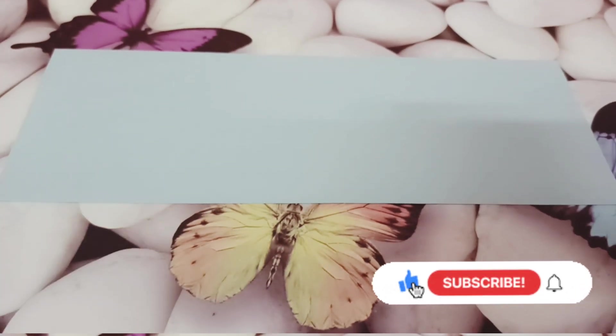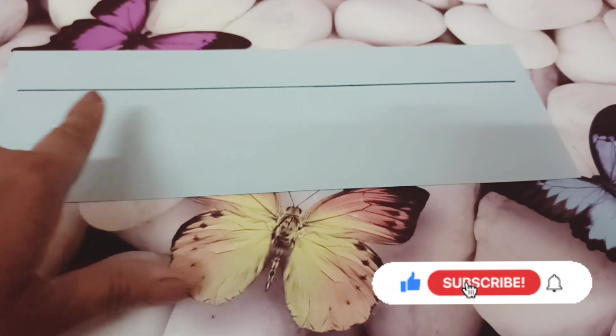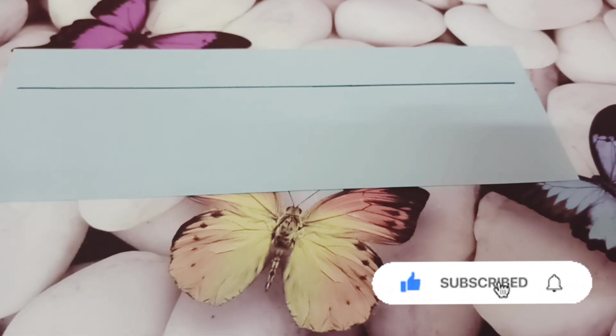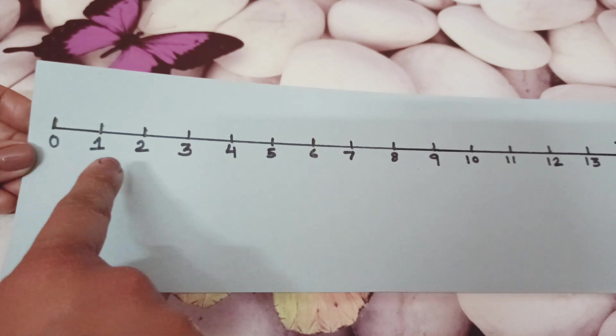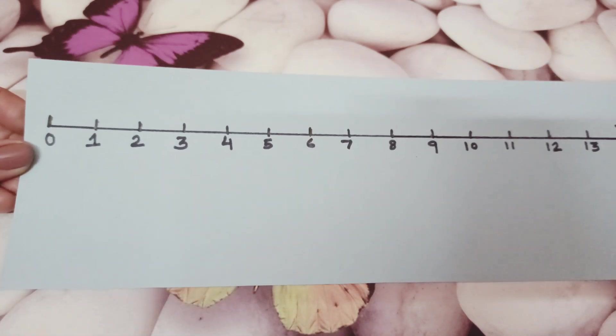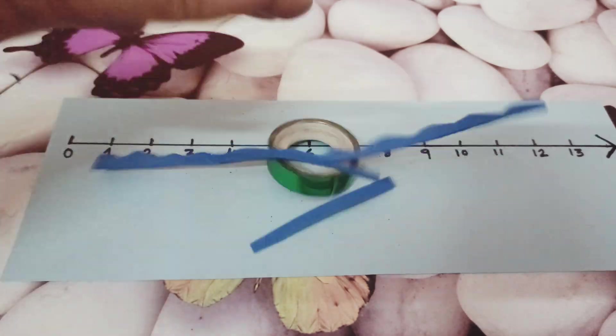Now we will draw a number line on it. If you want to see how to draw a number line perfectly, the link of the video is given in the description box. Now here I have drawn the number line. You can see all the numbers are written at equal distance. Time to decorate.